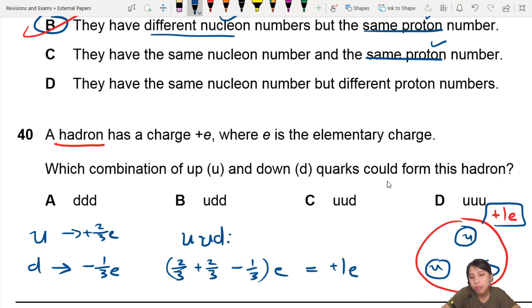So this is up-up-down. This is, by the way guys, a proton. Proton is up-up-down. Positive 1 charge.